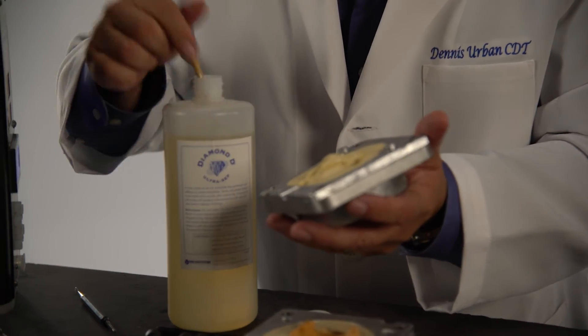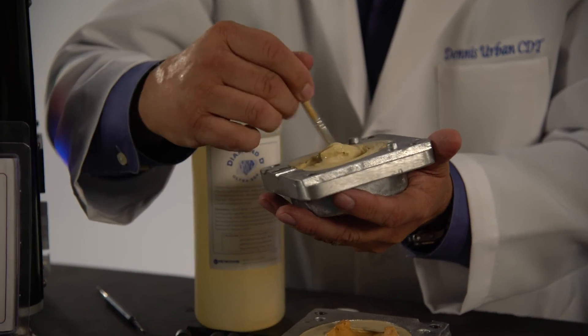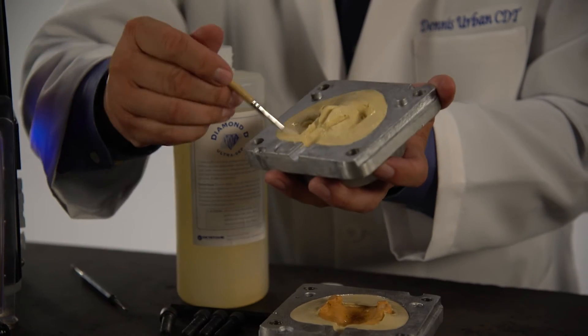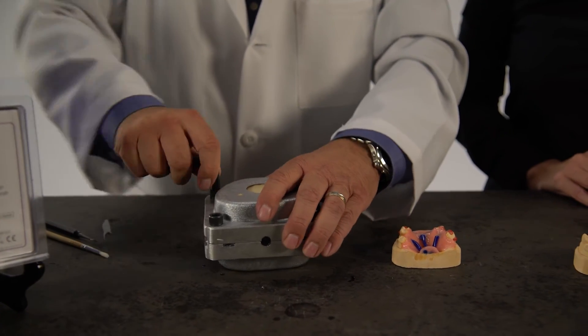After the case is boiled out, apply one coat of Diamond D Ultracept to all gypsum areas. Allow separator to dry, and then close and screw bolts into the flask.